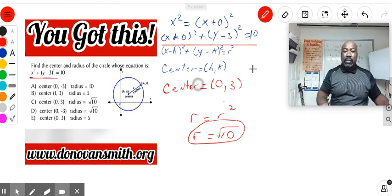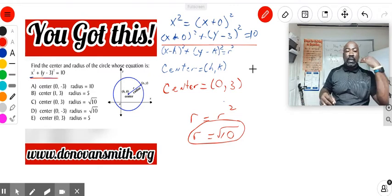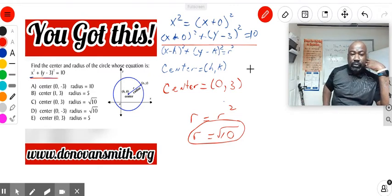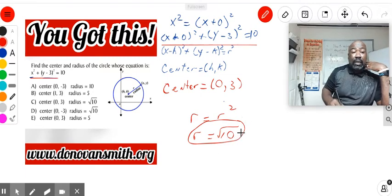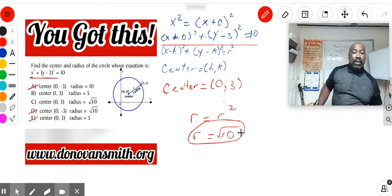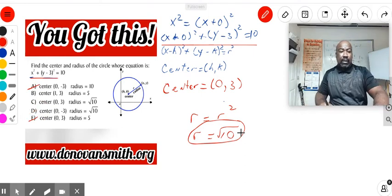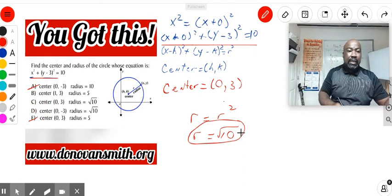So now to help eliminate some things, we could have just took a look at the radius right here and look at our answer choice. If the radius has to be square root of 10, we could just eliminate A, B, and E.